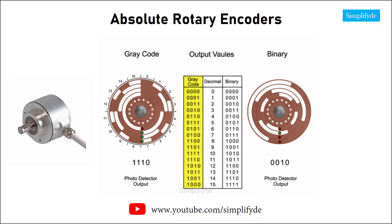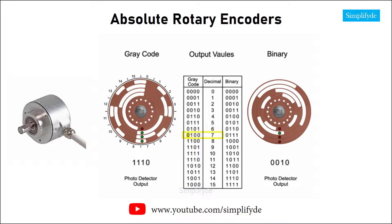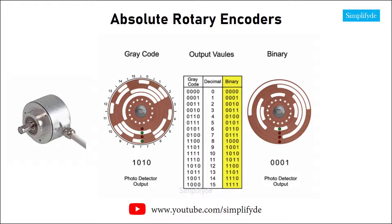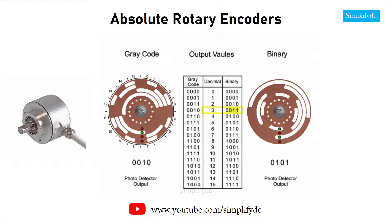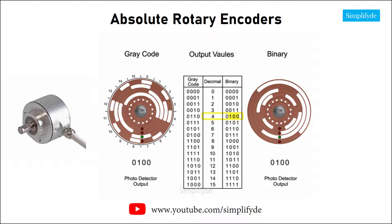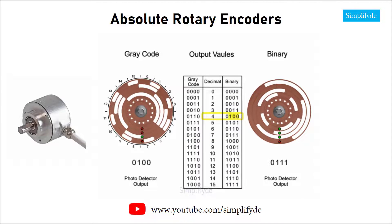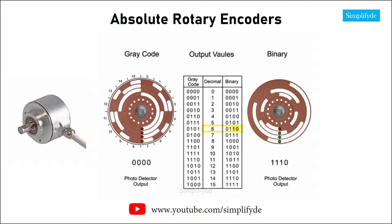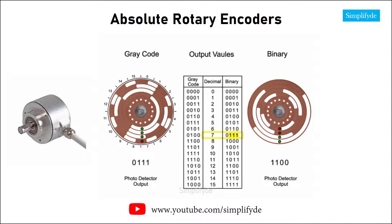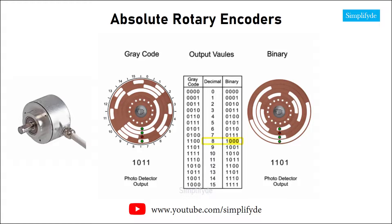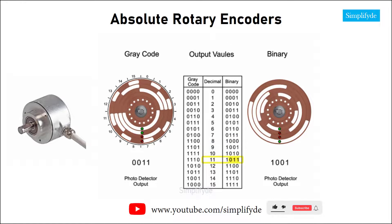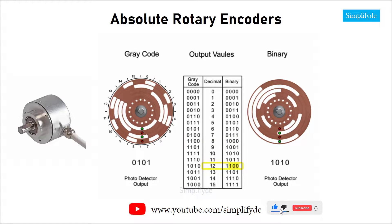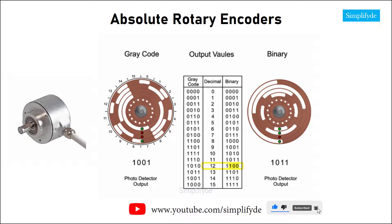Gray code is designed where only one bit changes at a time, contrary to a binary system where one or more numbers change in the word. By changing more than one number of the word at a time in the binary system, the possibility of positioning errors is greater, leaving gray code the preference in precision applications.